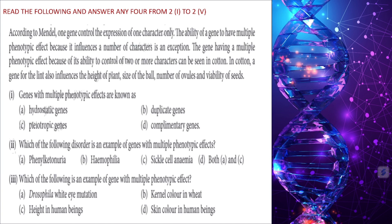In cotton, the gene for lint also influences the height of the plant, size of the boll, and number of ovules and viability of seeds. First question from this case: genes with multiple phenotypic effect are called pleiotropic genes. One gene showing many effects — that is pleiotropy.